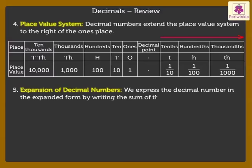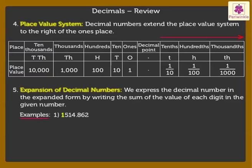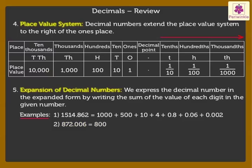The expanded form of 1514.862 is 1000 plus 500 plus 10 plus 4 plus 0.8 plus 0.06 plus 0.002. The expanded form of 872.006 is 800 plus 70 plus 2 plus 0.006.